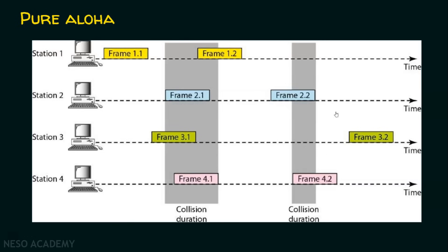I hope now you can understand pure aloha — any station can transmit the data at any time. Station one alone transmitting means no collision. There are chances station two, three, or four could transmit at the same point, but when multiple stations transmit simultaneously, their frames collide. Here only station two and station four's frames are colliding with each other, while station three transmits without collision.